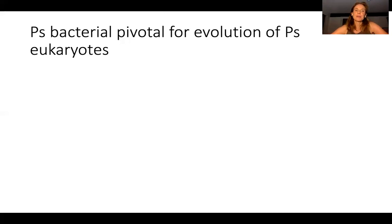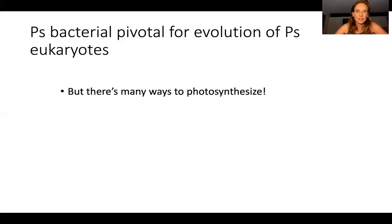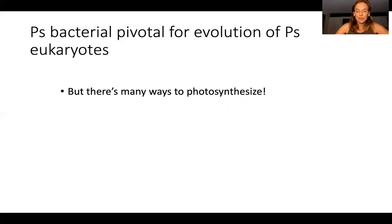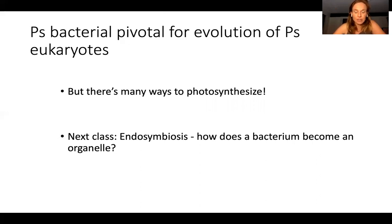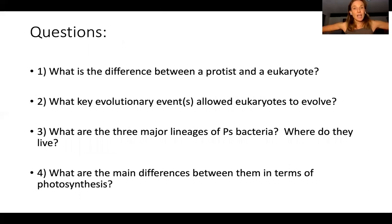Why was photosynthetic bacteria pivotal for the evolution of photosynthetic eukaryotes? There are many different ways to photosynthesize — that's a key point. The different lineages of eukaryotes look different depending on which bacteria became the chloroplast. Next class we're going to go through this really clearly. I'll talk about how a bacterium actually becomes an organelle over evolutionary time — it's not immediate, and in some cases what seems immediate isn't really an organelle. There are all sorts of variations on this theme we'll discuss.